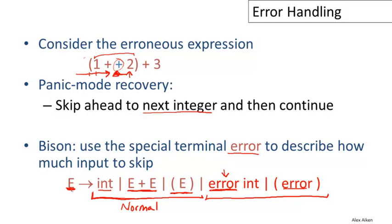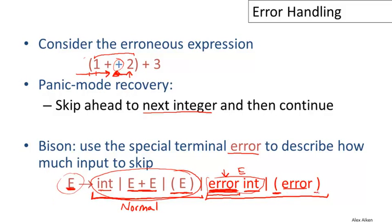Conceptually, the parser is trying to recognize one of the expression forms. It's in a state where it expects to see an integer, a plus, or a parenthesized expression. If that isn't working out and it gets stuck, it can hit the panic button, declare it's in an error state, and throw away all the input — the 'error' symbol will match all the input up to the next integer, and then the whole thing can be counted as an E, and parsing continues. Similarly, if an error occurs inside a pair of matched parentheses, it can throw away the whole thing and reset at the parentheses boundaries.